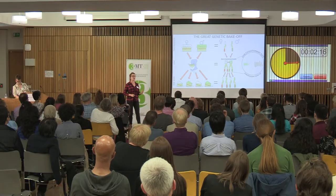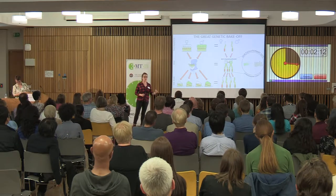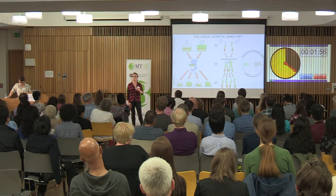Now, a very similar process happens in the cells that go on to produce your eggs and sperm. It's known as meiotic recombination. And essentially, it acts like a physical cut-and-paste tool, exchanging chunks of information between the genetic recipes which you inherited from your parents, meaning that the instructions you pass on to your kids are not quite the same as those which you inherited from your parents.